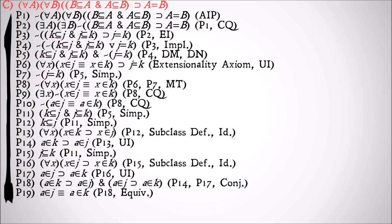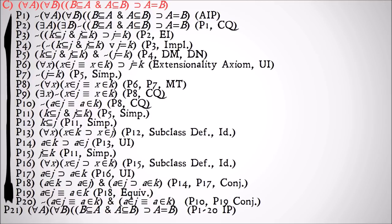Conjoining them and using equivalence will show that A is a member of J is materially equivalent to A is a member of K, which is in direct contradiction to the claim that it's not the case that A is a member of J is materially equivalent to A is a member of K. So that's a contradiction, meaning that we can conclude the negation of our original statement, which is just our conclusion: for all A and all B, if B is a subclass of A and A is a subclass of B, then B equals A. 1 through 20, indirect proof.